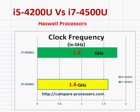Let's compare the Intel Core i5-4200U versus i7-4500U. Both of them are Haswell processors, which means that they belong to the same class or same family of processors.